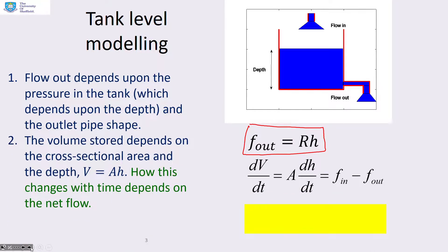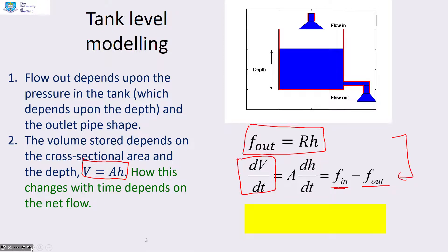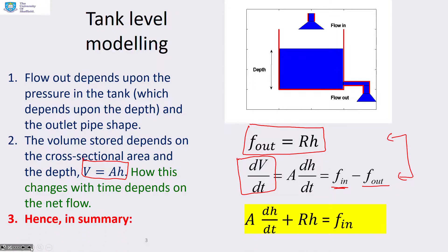The volume stored depends on the cross-sectional area: volume equals A times depth h. As a rate of change with time, dV/dt equals flow in minus flow out. Combining these two equations gives the model: A·dh/dt plus R·h equals flow in.